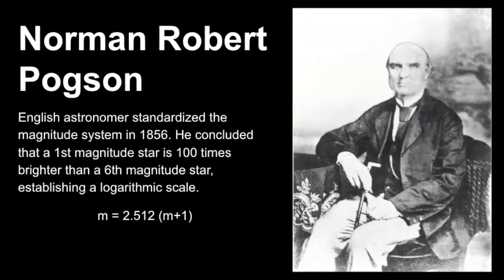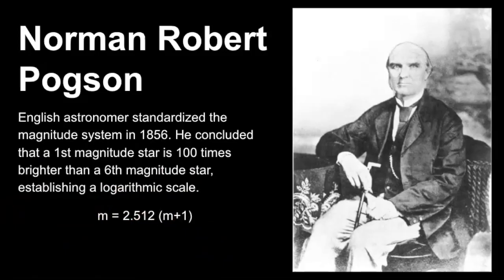Then in 1856, an English astronomer known as Norman Robert Pogson standardized this magnitude system. He concluded that a first magnitude star is 100 times brighter than a sixth magnitude star, and this established a logarithmic scale.